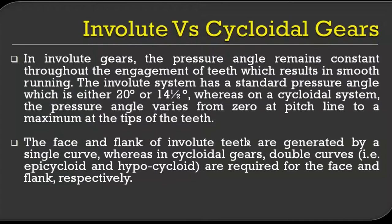The face and flank of involute teeth are generated by a single curve, whereas cycloidal teeth use a double curve — the face of the gear tooth is a hypocycloid and the flank is an epicycloid.